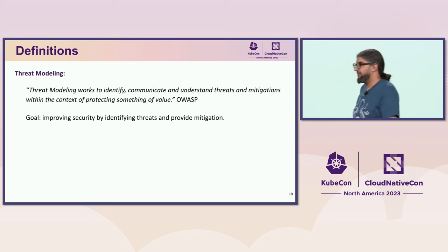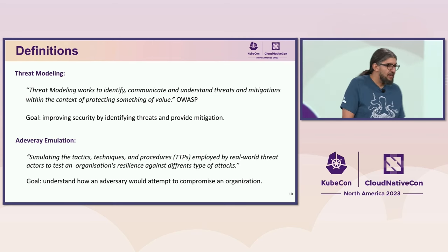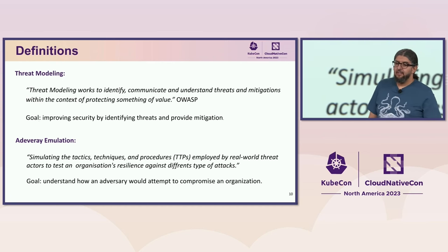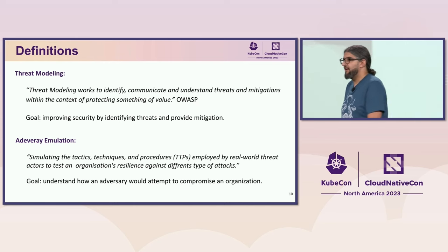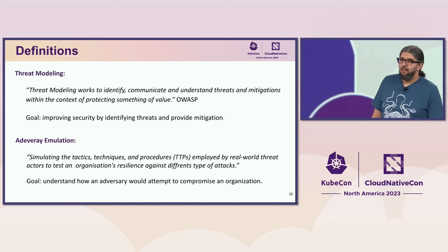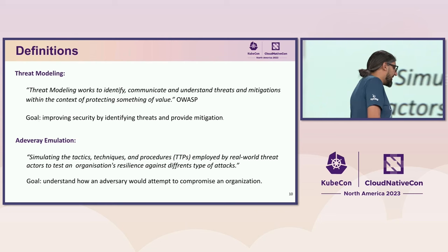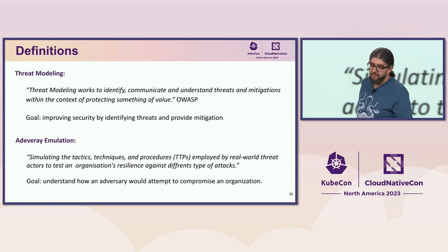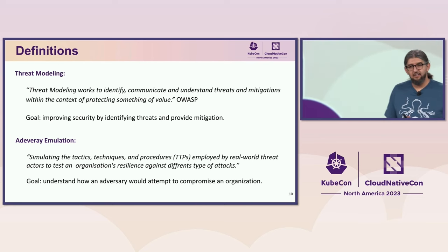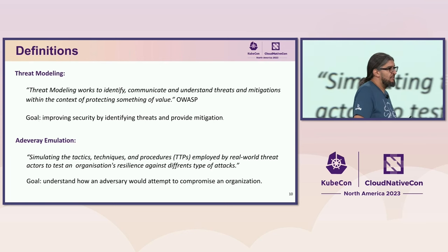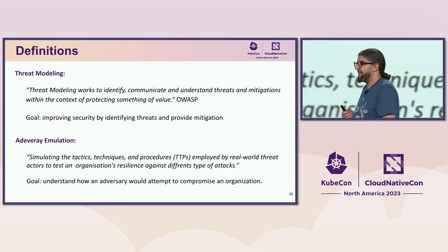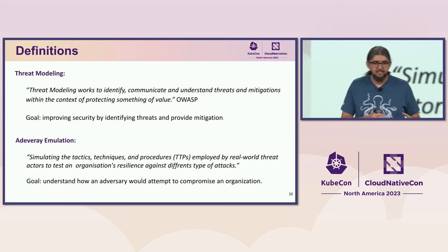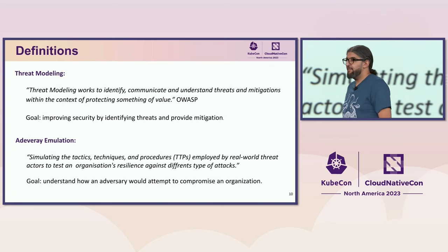Let's go over a couple of definitions for those not from a security background. Threat modeling is the exercise to identify the different building blocks of your system, then identifying threats and mitigations for those potential threats. It's always concerning valuable assets — if you have images exposed in public S3 buckets, it doesn't matter if someone accesses them. Adversary emulation, on the other side, is the exercise of using the same tactics, techniques, and procedures of bad actors to mimic their behavior and test your system's resiliency against that.